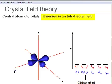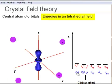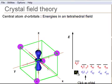In a tetrahedral crystal field, four ligands approach along opposite corners of a cube, forming a tetrahedral crystal field.